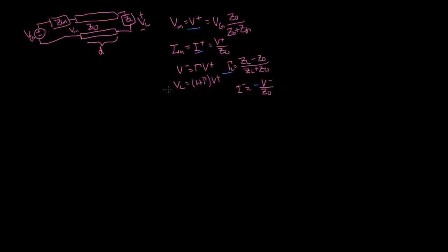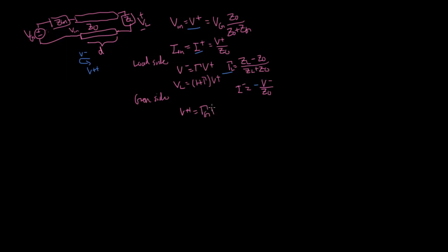The reflected wave heads back towards the generator. When it hits the generator, it's also going to experience a reflection if Z naught and Zg are mismatched. On the generator side, the same kind of calculations apply. This negative wave bounces back, and when it goes forward we call it V plus plus — the second forward-going wave that has been through a couple of reflections. V plus plus is going to be equal to Gamma G times V minus.